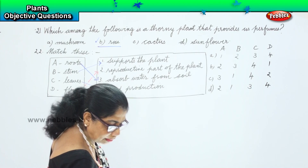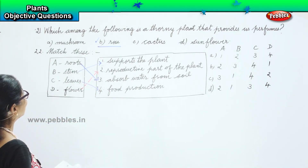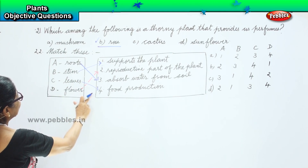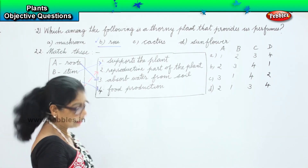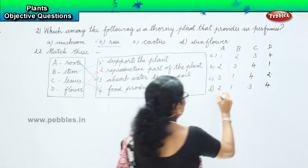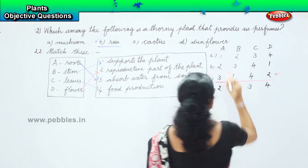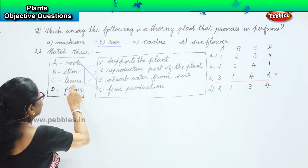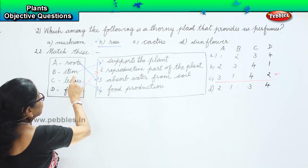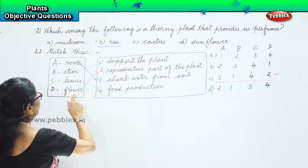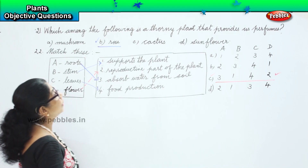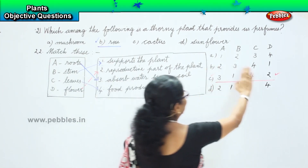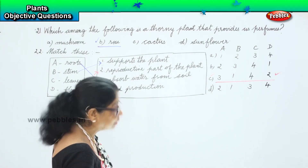Now we have done the matching. Let us look at which option is correct. The answer is 3,1,4,2 — that is the correct answer. So option C is the correct answer: roots — 3, stem — 1, leaves — 4, flower — 2.